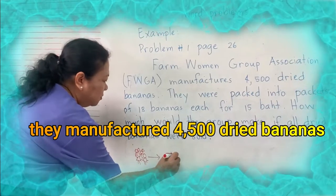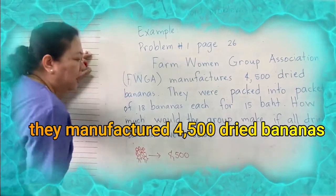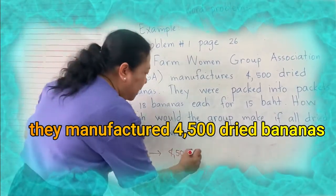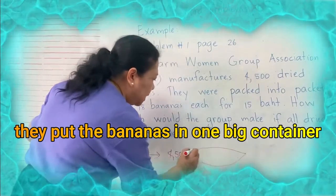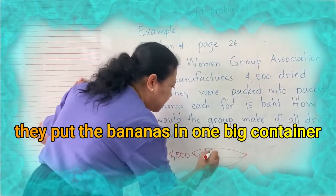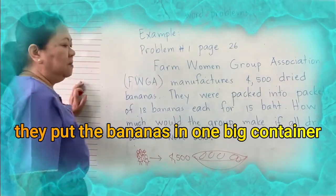And they made, manufactured 4,500 dried bananas. So maybe it is in a big container, a big container, all of these bananas. 4,500.